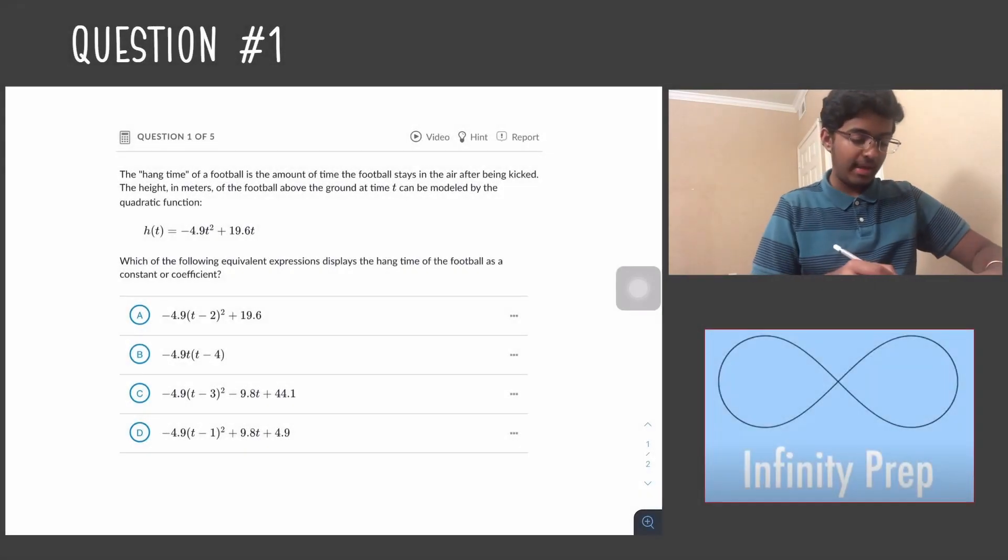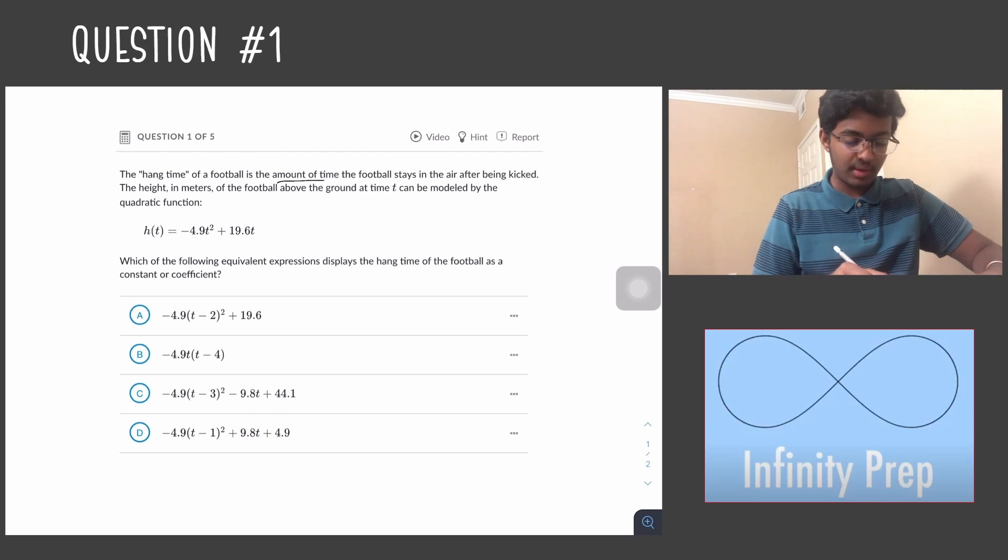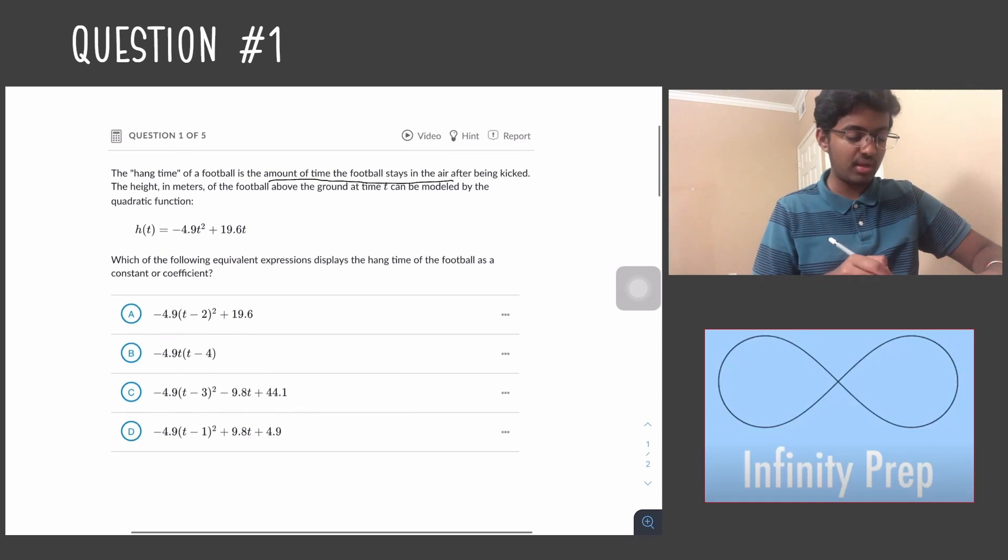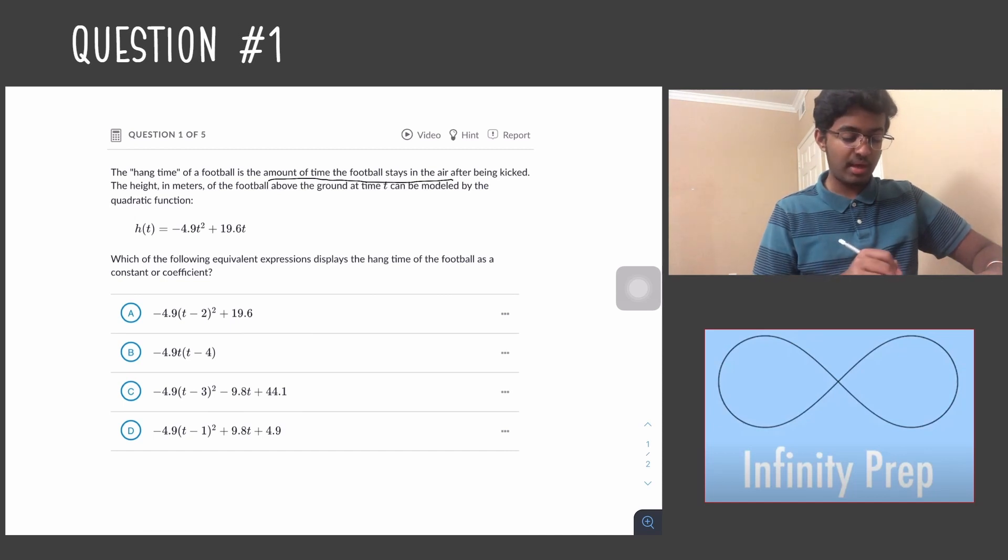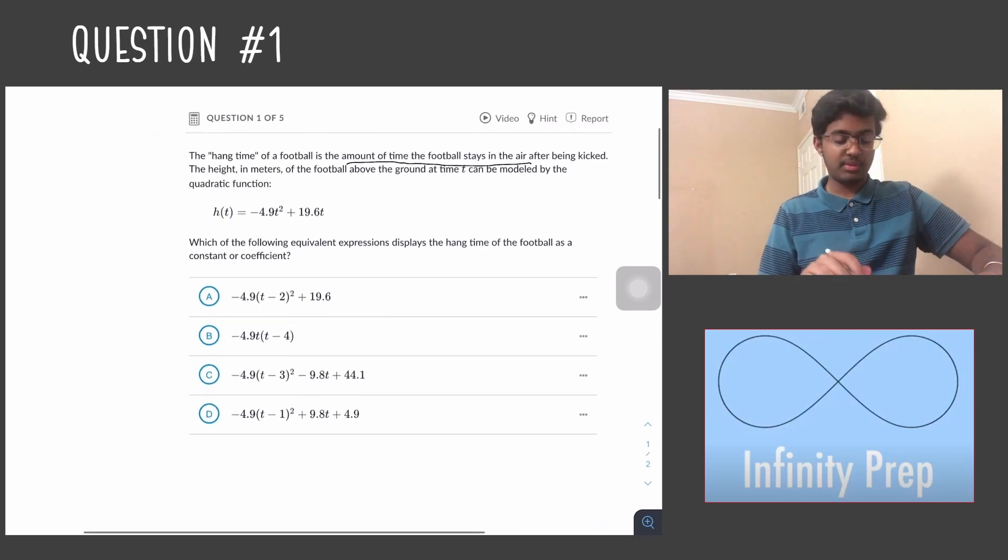Question number one: The hang time of a football is the amount of time the football stays in the air after being kicked. The height in meters of the football above the ground at time t can be modeled by the quadratic function h(t) = -4.9t² + 19.6t. Which of the following equivalent expressions displays the hang time of the football as a constant or coefficient? Basically what this problem is asking us to do is to solve the equation -4.9t² + 19.6t so that it's in a form where we can find the solutions for t.